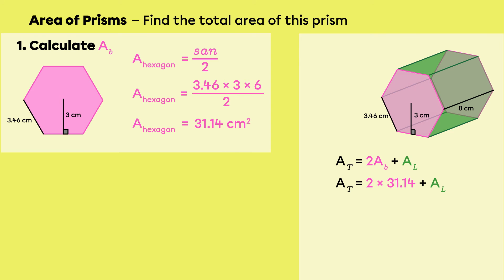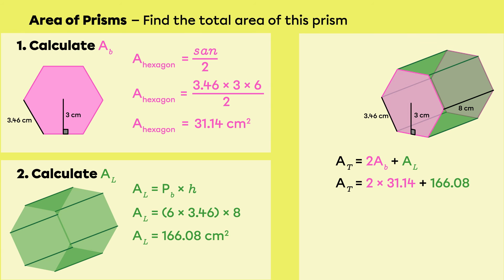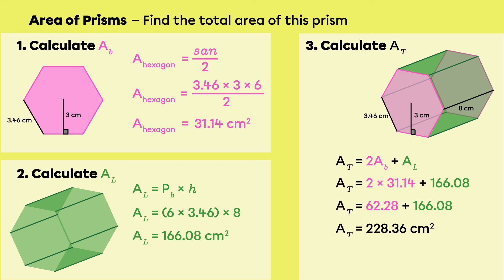Don't forget the area is expressed in square units like centimeters squared, meters squared, or millimeters squared. We continue with the lateral area using the formula: perimeter of the base times the prism's height. The perimeter of the hexagon is 6 times 3.46, because the hexagon has 6 sides each measuring 3.46 centimeters, then we multiply by the height of the prism. The lateral area is 166.08 centimeters squared. By adding the area of the two bases with the lateral area, we find that the total area is 228.36 centimeters squared.